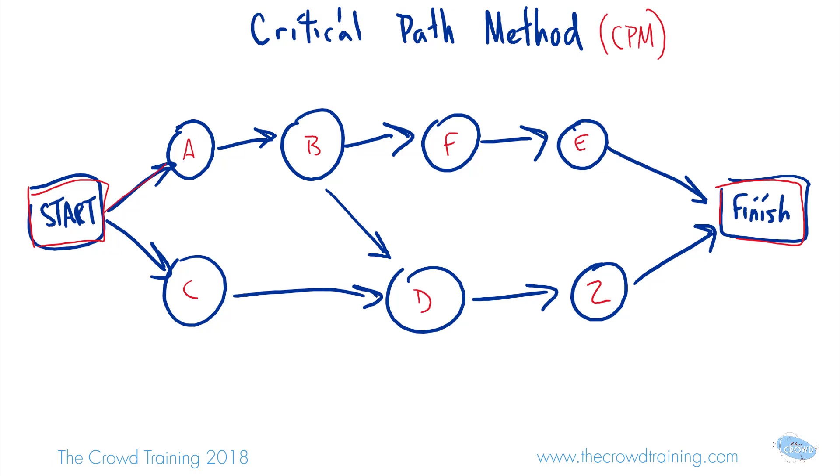There is a path that goes from start to A, then to B, F, E, and then to finish. So let's call that path one, and we'll use numbers instead of repeating letters. This is in red.